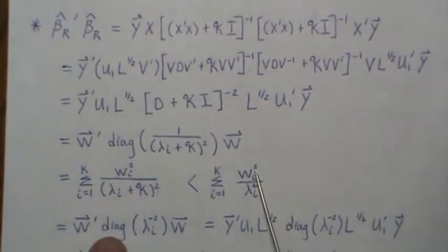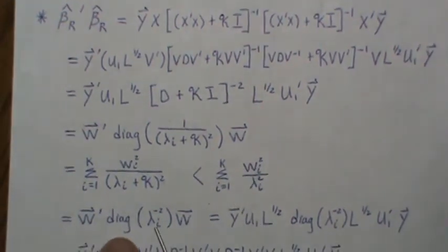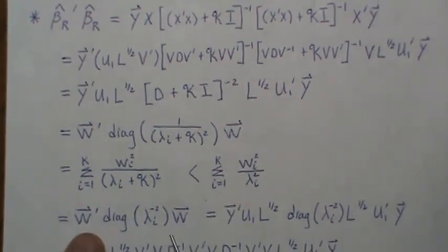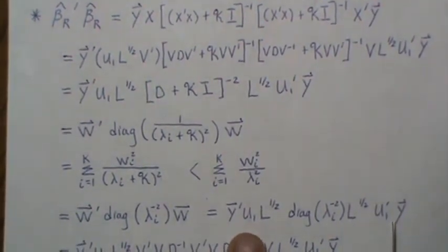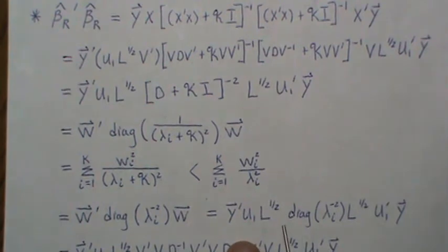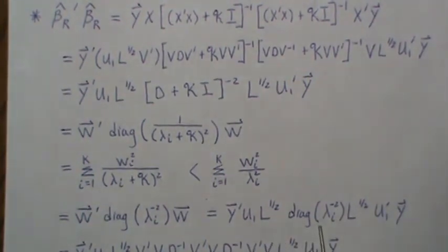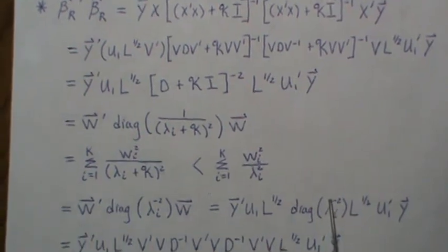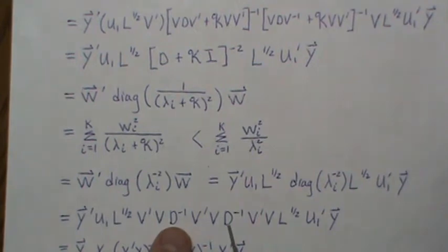Now let's start unfolding things. W, going in reverse, can be shown to be this multiplication. Then we fill in what W is, and then we stick in the identity matrix everywhere. We put V prime V here, we put V prime V here.